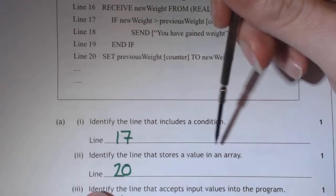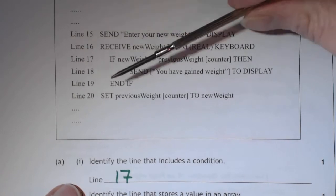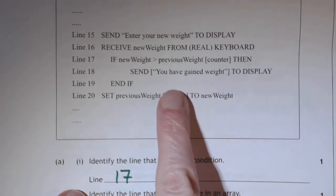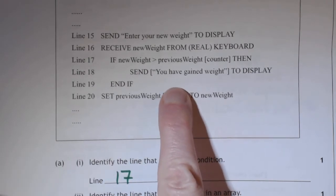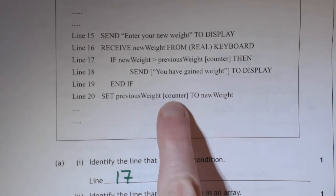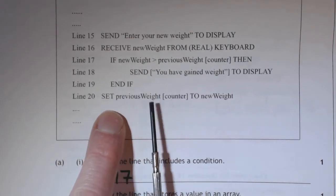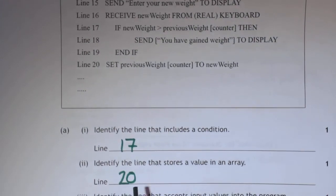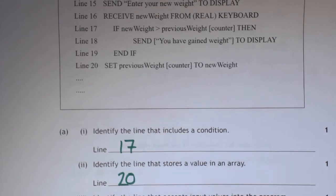Next one, stores a value in an array. So this is when you're setting, use the word set. So you set previous weight to whatever. Now if it was just like this without this counter, that would mean it's a variable. Counter just means your array has in previous weight position zero, position one, two, etc. So this is where you've stored a value, line 20, and it's in your array.